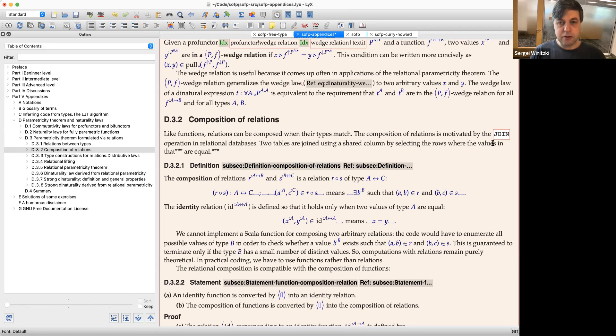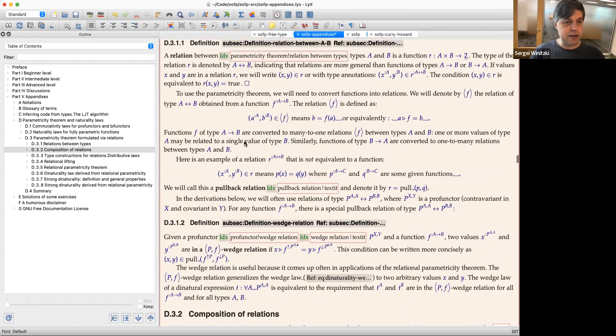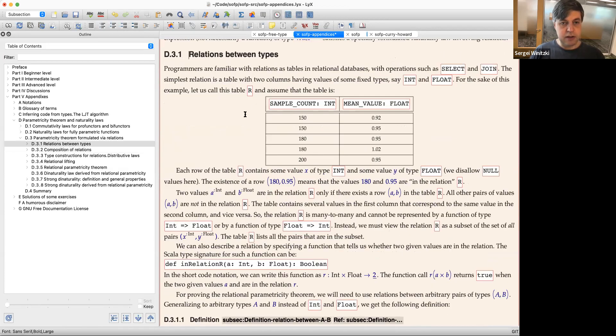By selecting the rows where the values in the shared column are equal. Then I want to put some example on the page. So previously, here I had an example table. Let's just copy that.